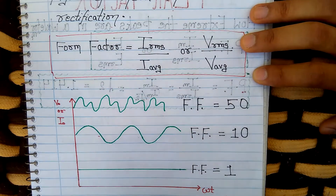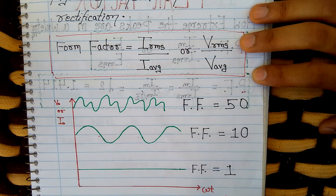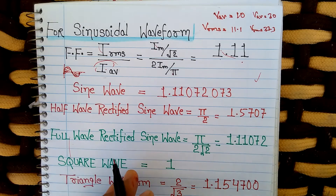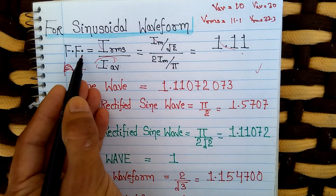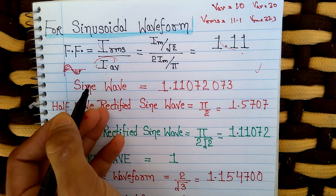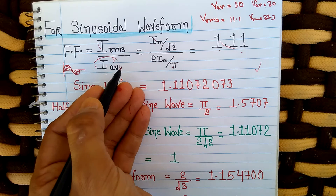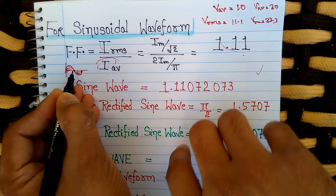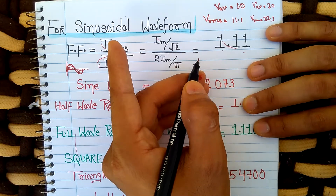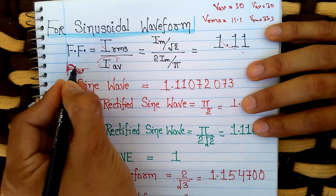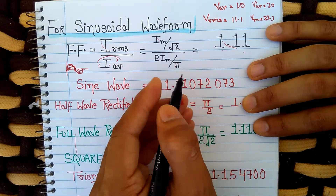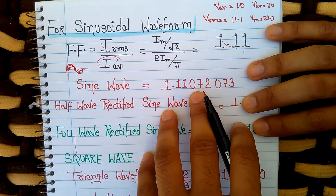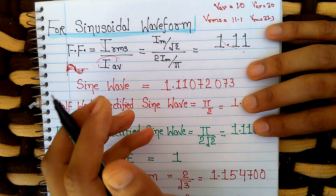If you are rectifying something, keep note that the value of form factor should be as close to one as possible — if it is one, it is perfectly smooth DC. For a sinusoidal waveform, which is the most commonly used in AC systems, form factor is the ratio of RMS to average value. For the half cycle, the RMS value comes out to be Im divided by root 2, while the average value comes out to be 2·Im divided by π. The average value for a complete cycle comes out to be zero.